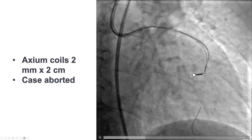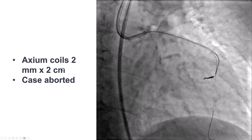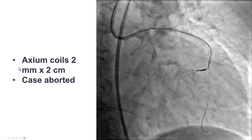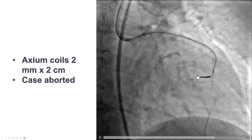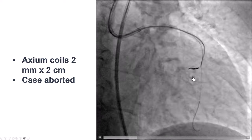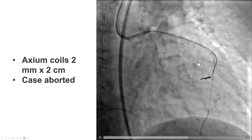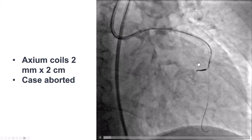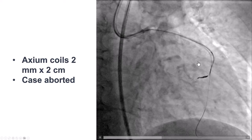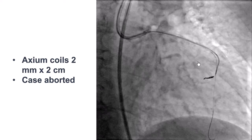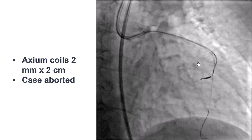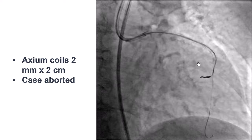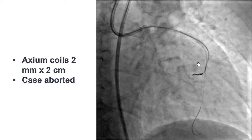We deployed a 2 mm by 2 cm axiom coil into that branch and stopped the case. In case of complication, it's always best to stop the case, let the patient recover, and then try again.